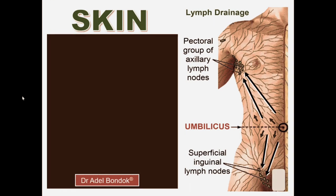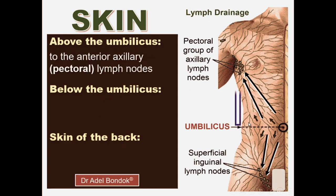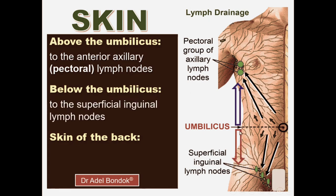Starting with the lymph drainage of the skin of the abdomen — the anterior abdominal wall — above the umbilicus and below the umbilicus. Above the umbilicus drains into the anterior group of the axillary lymph nodes. Below the umbilicus drains into the superficial inguinal lymph nodes.